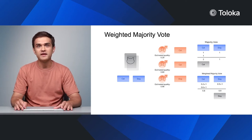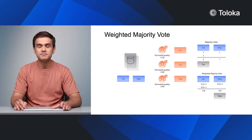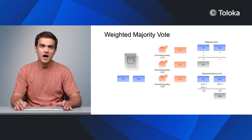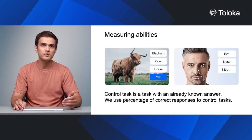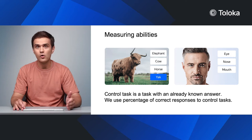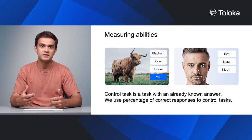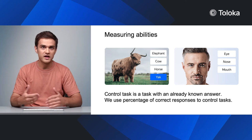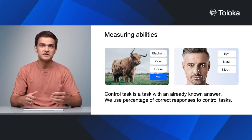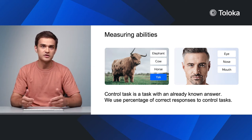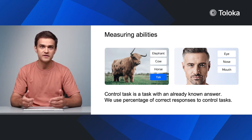Note that the key ingredient of weighted majority vote is the performer's skill. How do we get those skill levels? We can compute the accuracy of performers on questions with known answers called control tasks — also known as golden sets or honeypots. We mix control tasks in with normal tasks, check the answers, and find out the percentage of correct responses for the project as a whole and for individual performers.